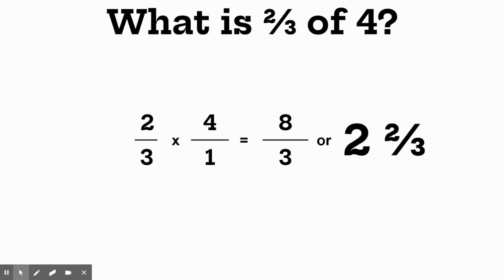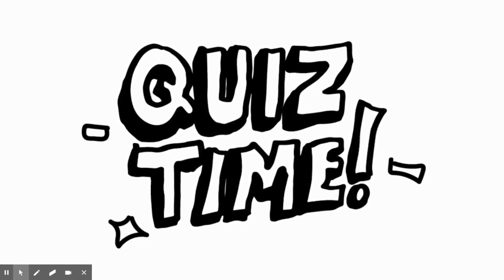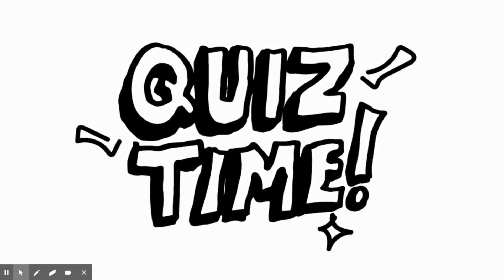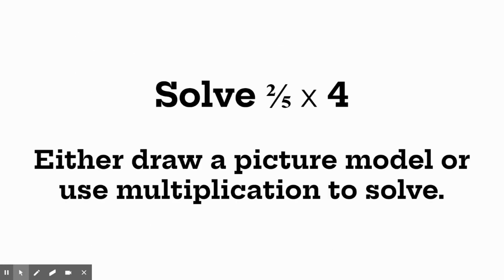Now that we've done three examples together, it's quiz time. I want you to try one on your own. Solve two fifths times four — it's up to you how you want to solve it. You can either draw a picture model or use the multiplication method. Good luck — go ahead and tell me what you got.